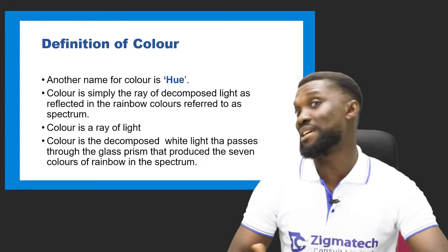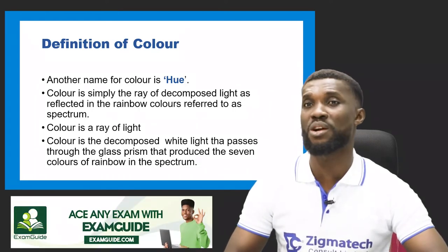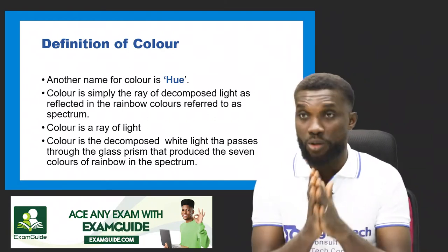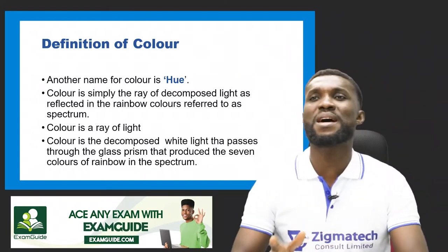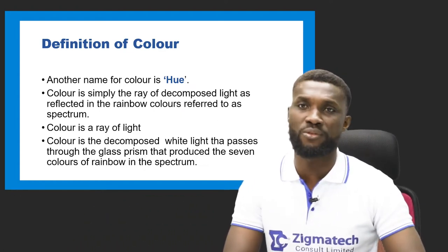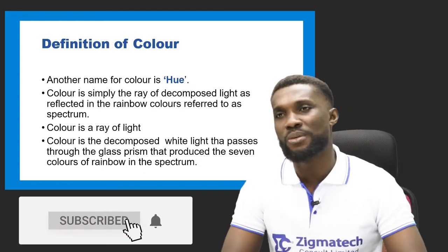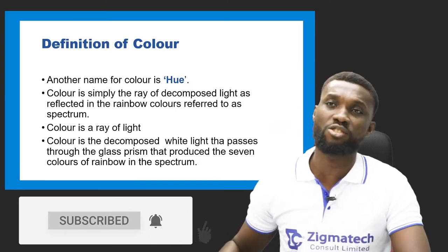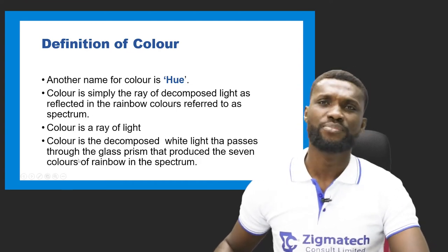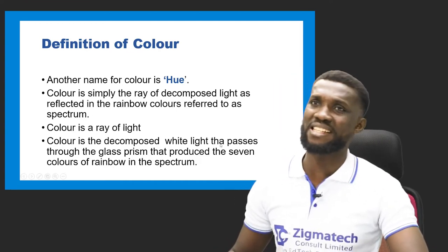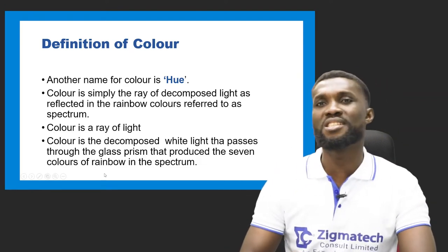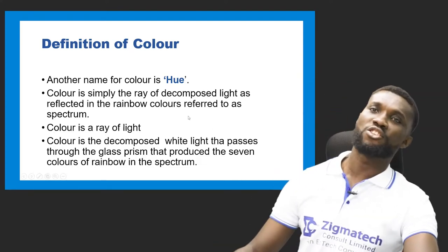One other definition: color is the decomposed white light that passes through the glass prism and produces the seven colors of the rainbow in the spectrum. So color is the decomposed white light that passes through the glass prism that produces the seven hues of the rainbow in the spectrum.